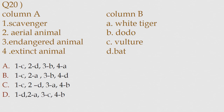Question number 20. Match the following. Option A: 1C, 2D, 3B, 4A. Option B: 1C, 2A, 3B, 4D. Option C: 1C, 2D, 3A, 4B. Option D: 1D, 2A, 3C, 4B. The correct answer is Option C: 1C, 2D, 3A, 4B.